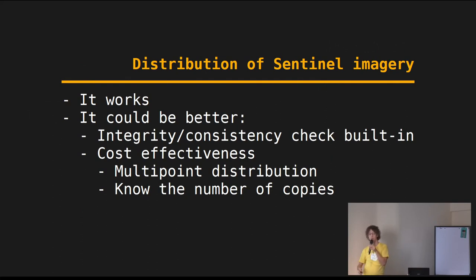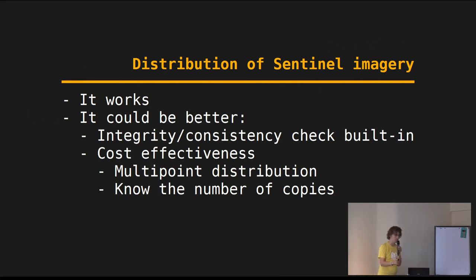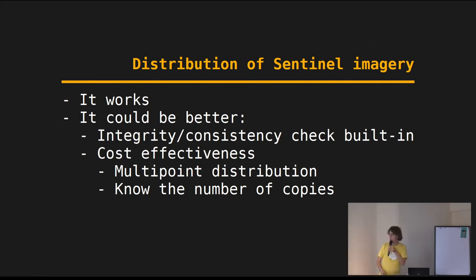I actually think it would be great to distribute Sentinel imagery with such a system. I want to emphasize that the current system works — getting so much data distributed is not easy, so I don't want to bash it. I just want to point out that there might be better or more efficient ways of doing it. One thing that could be better: if data you receive is corrupt — it might not be the actual data but got corrupted during transport — with a content addressable system using hashes you get integrity checking for free. You build the hash as the identifier; when you retrieve the data, you hash it the same way and if the identifiers match, you know it's exactly the data you wanted.